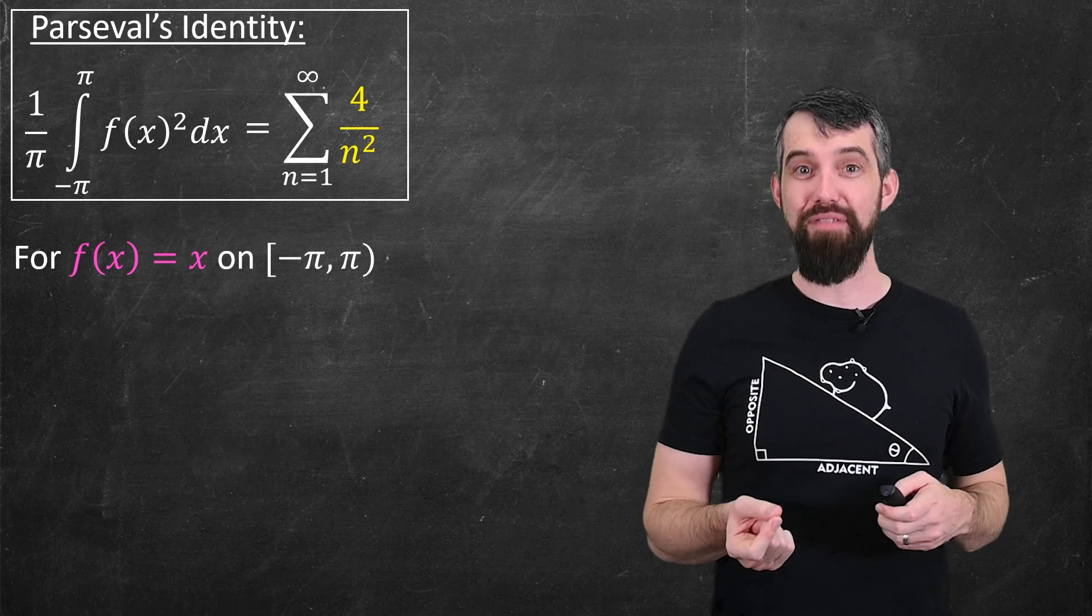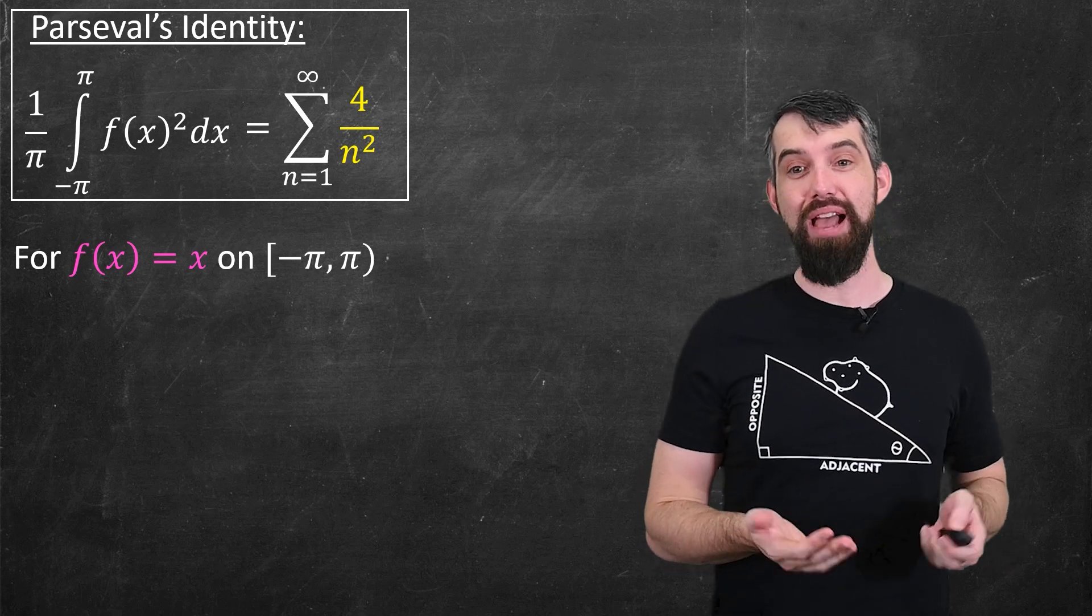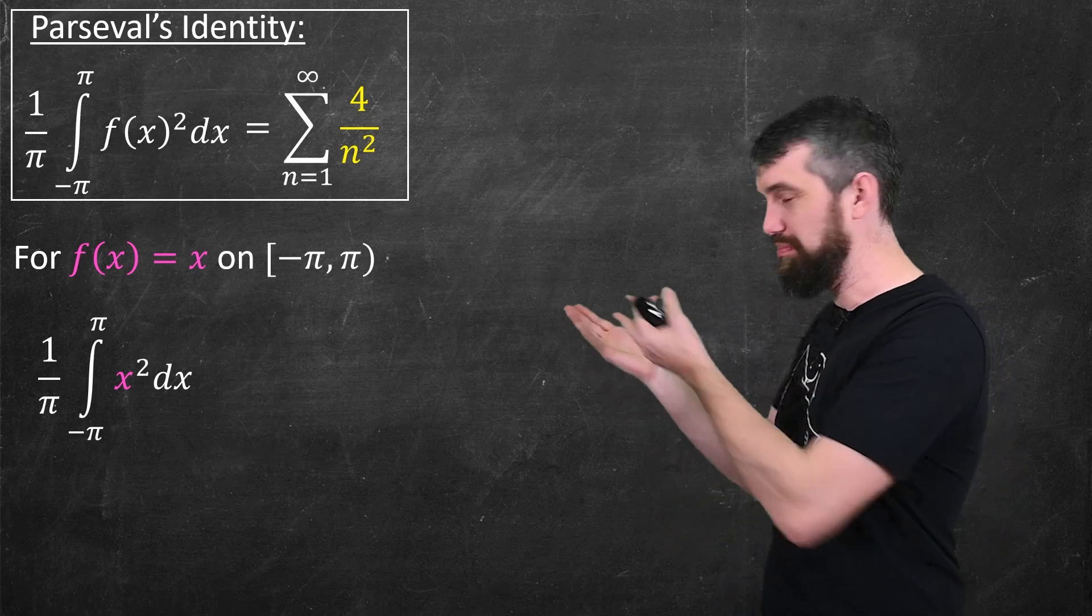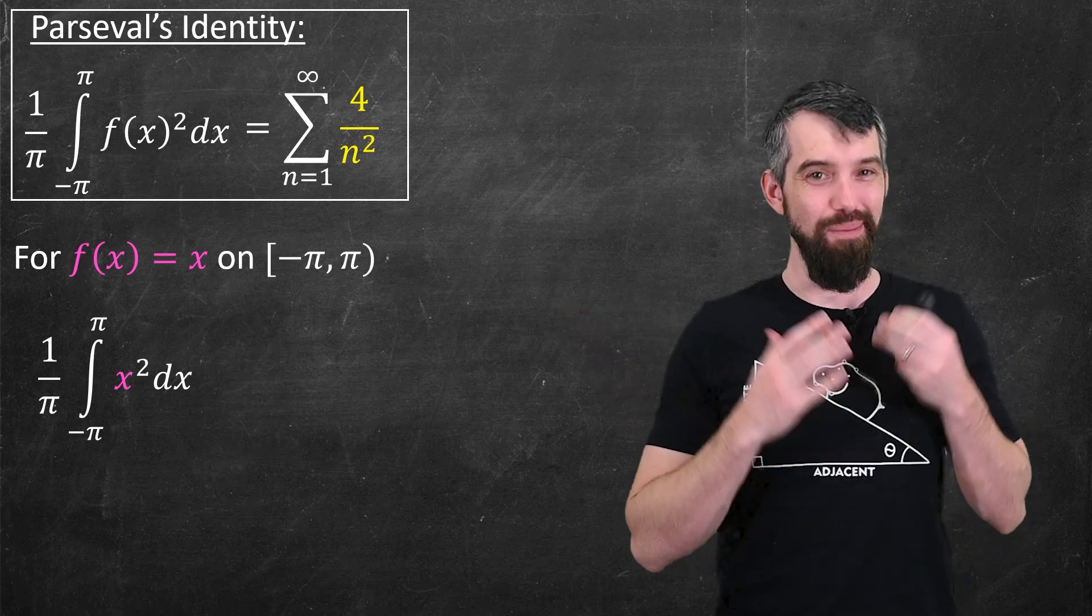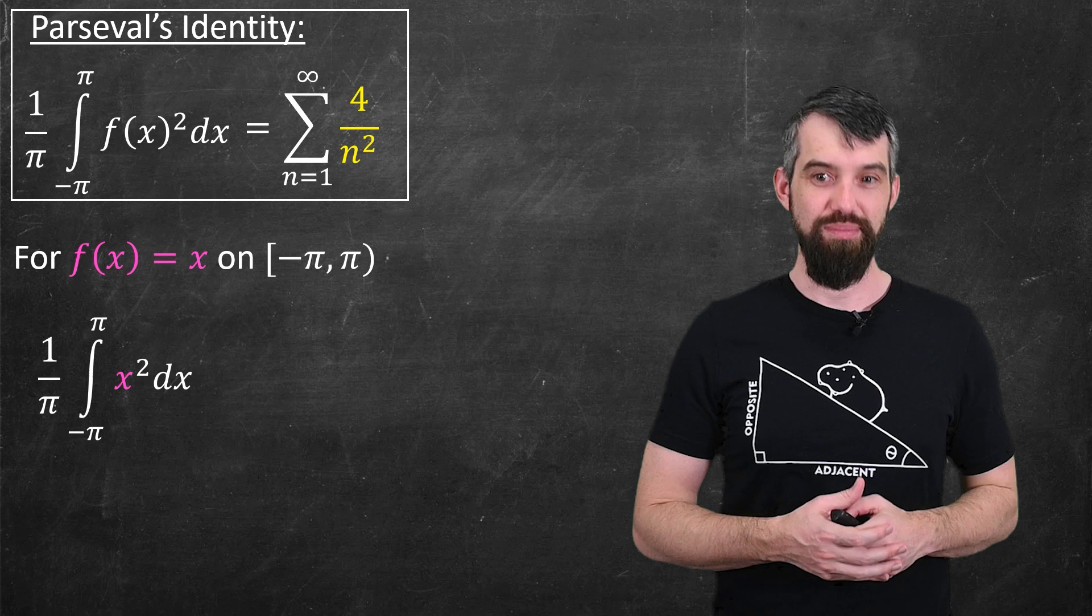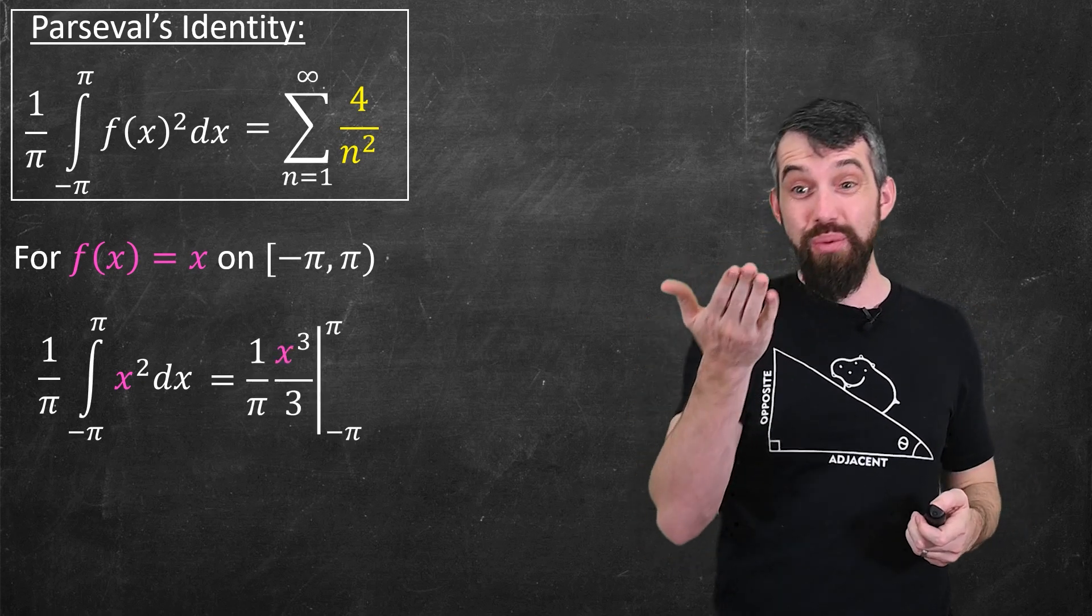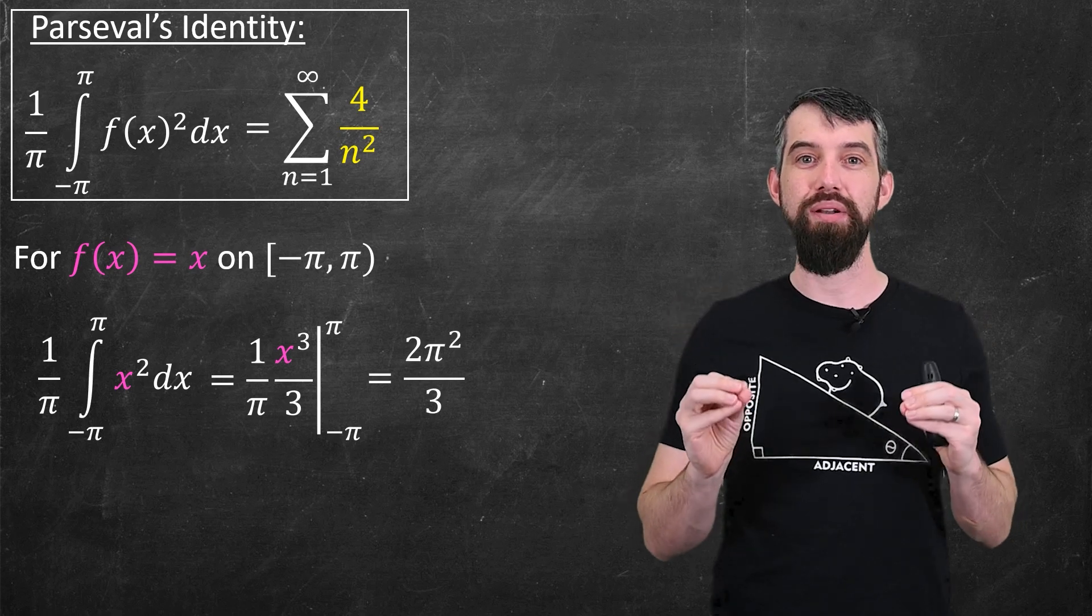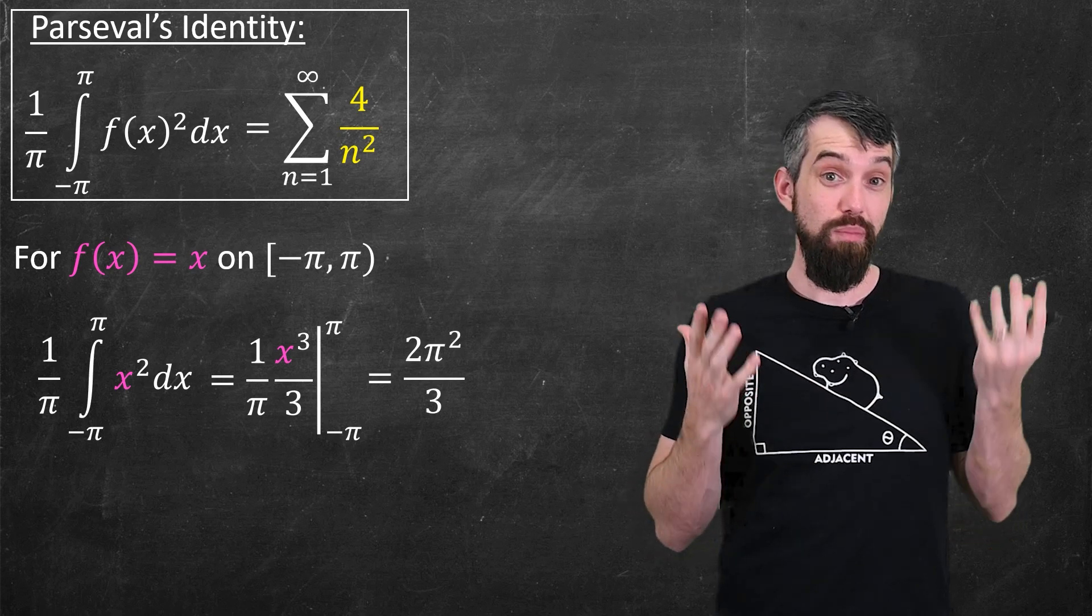Now I have to do the other side, the left-hand side. I can do an integral where f(x) = x. It's just a straightforward integral that we could do immediately in first-year calculus. Take that integral. It's x³/3. Evaluate it between π and -π, and what do we get? 2π²/3. The left-hand side was easy.